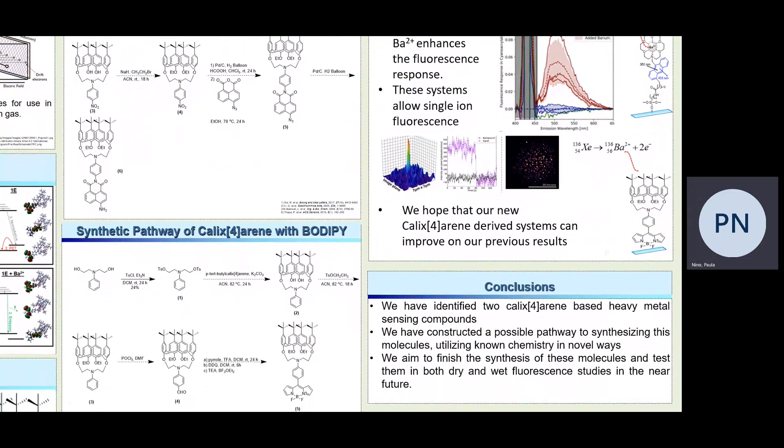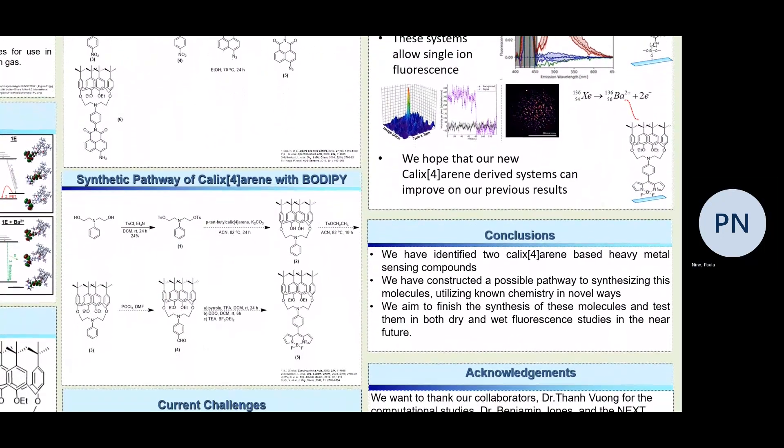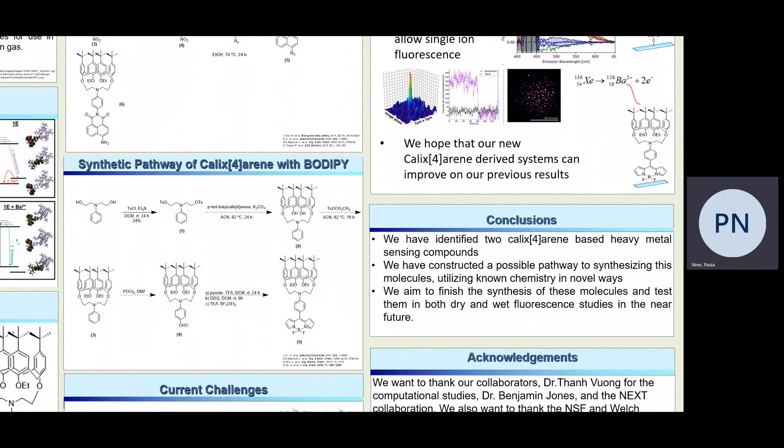As for conclusions, we have identified two calixarene-based heavy metal sensing compounds, we have constructed a possible pathway to synthesizing this molecule, and we aim to finish the synthesis of these molecules and test them in both dry and wet fluorescent studies in the future.